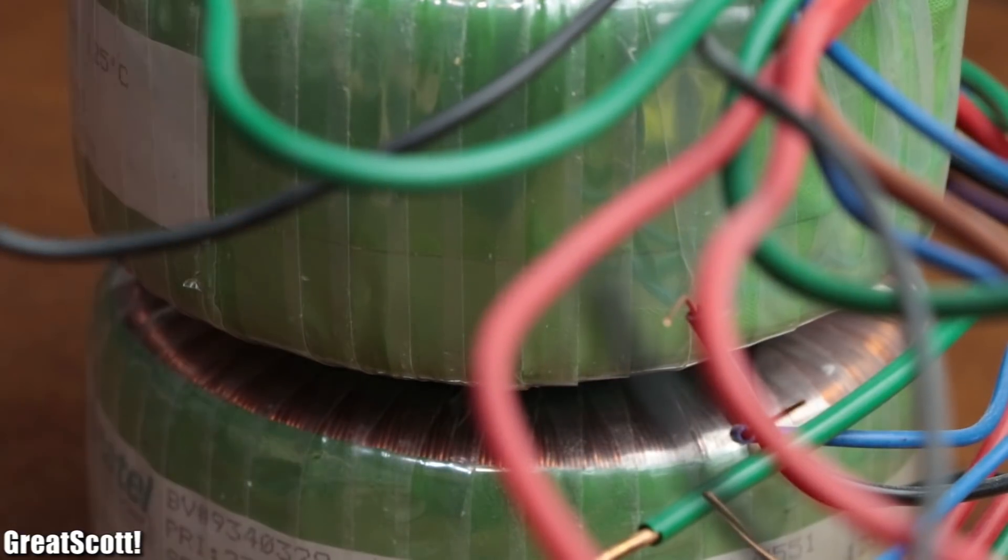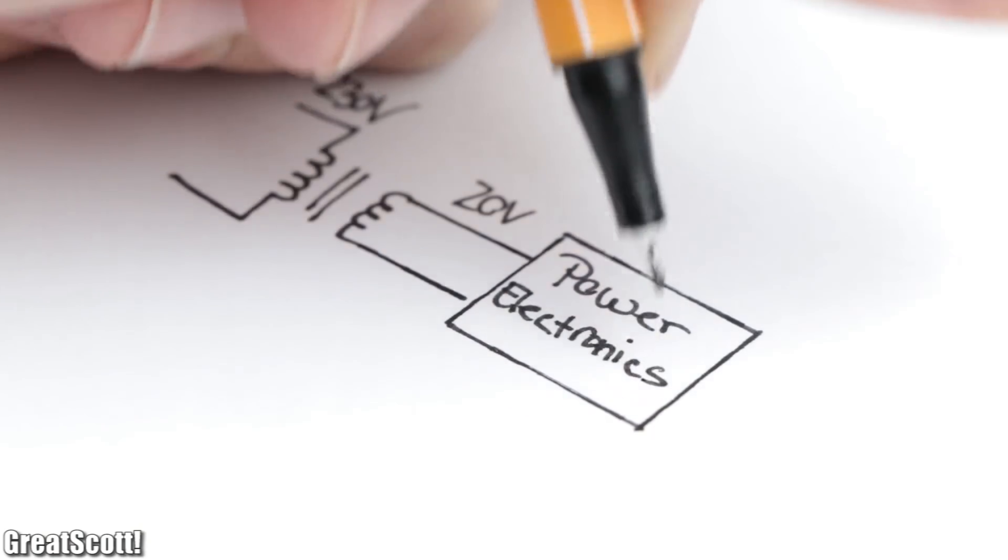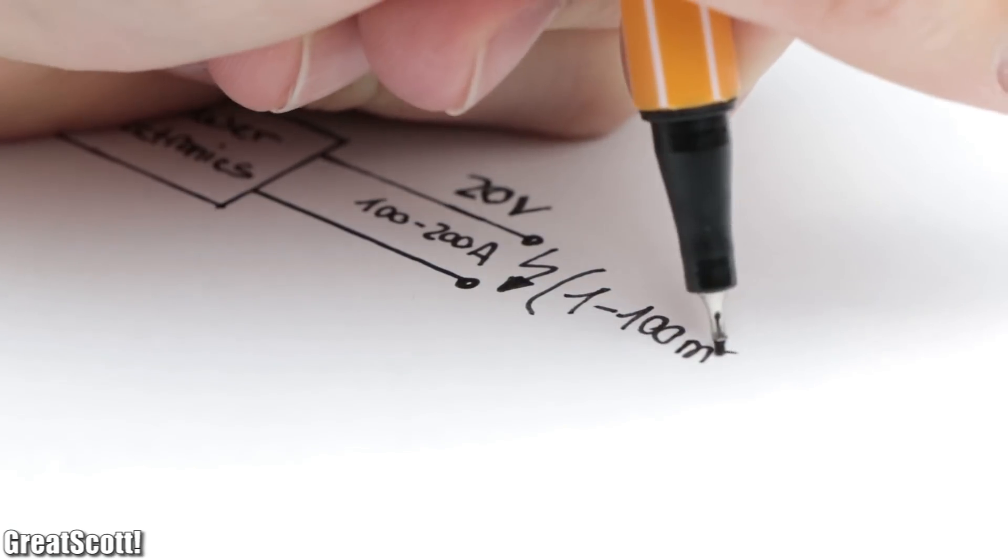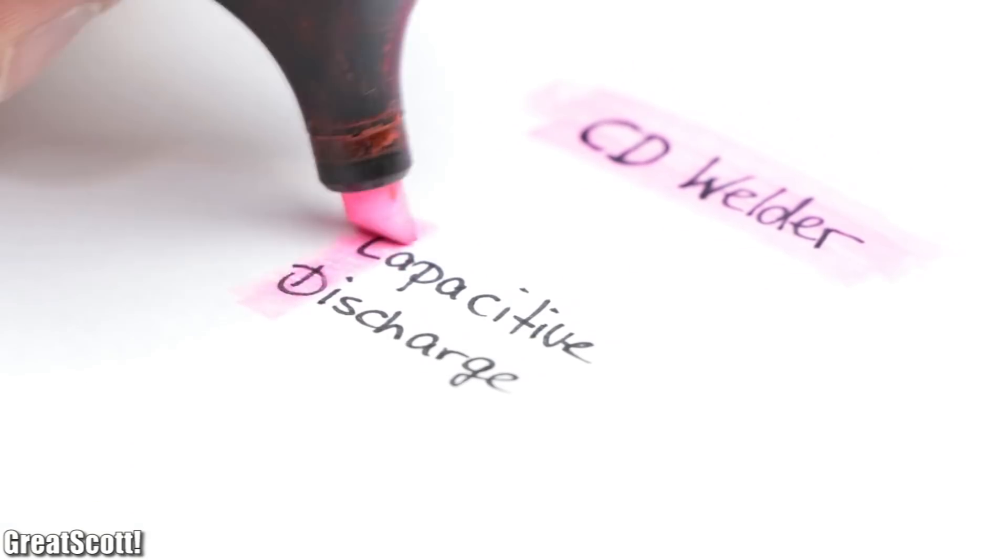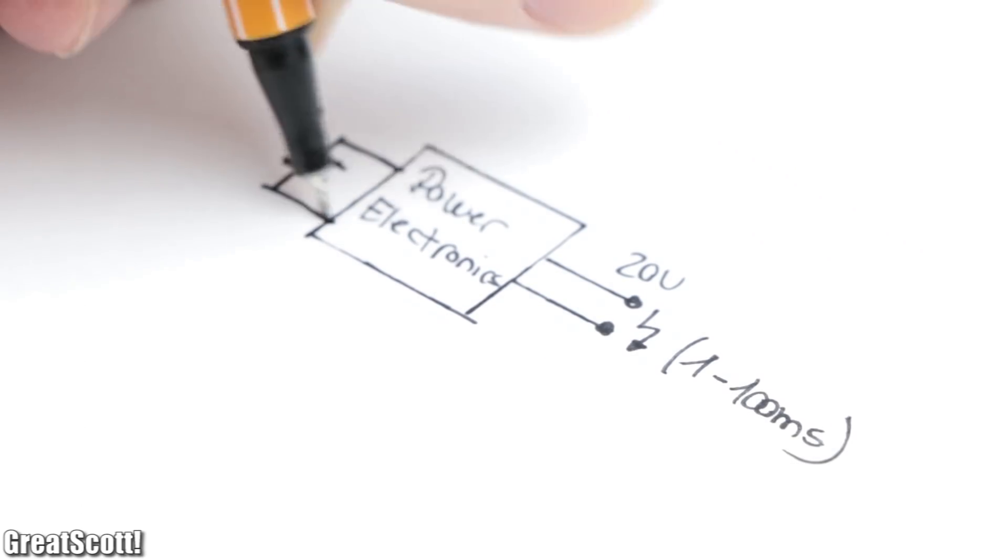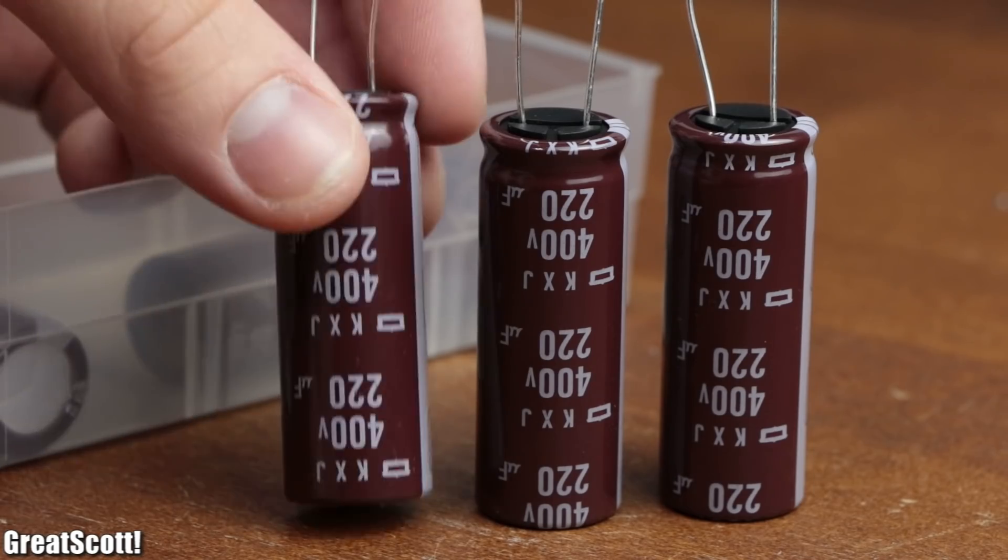When it comes to spot welders, we can either use a big transformer in combination with some power electronics to create small energy pulses with a length of a couple of milliseconds, or we can create a CD welder, aka a capacitive discharge welder.